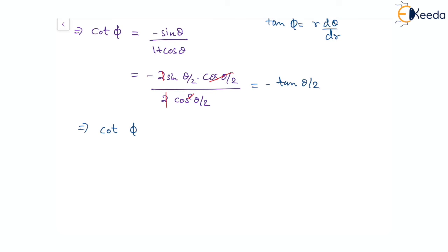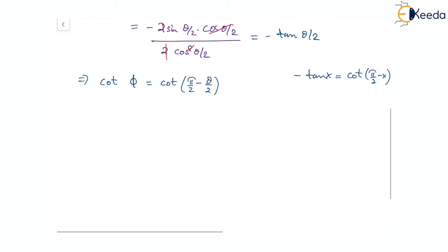Now minus tan(θ/2) can be written in terms of cot using the relation: minus tan x equals cot of pi by two minus x. So we get cot of phi equal to cot of pi by two minus theta by two. By comparison of angles, phi equal to pi by two minus theta by two.